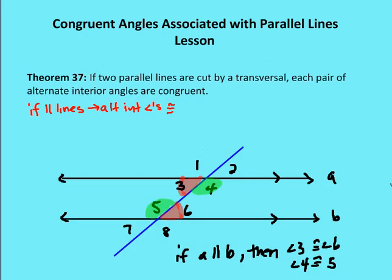Let's talk about different theorems associated with parallel lines. These are derived from our prior lesson when we talked about how we proved lines parallel. We started with alternate interior angles and used an indirect proof to show that when we have alternate interior angles, the lines must be parallel. Otherwise, we would have a triangle if the lines were not parallel, which would prove one of the alternate interior angles to be greater than the other. So if we have two parallel lines, we can say that the alternate interior angles are going to be congruent — angle three is congruent to angle six, and angle four is congruent to angle five.